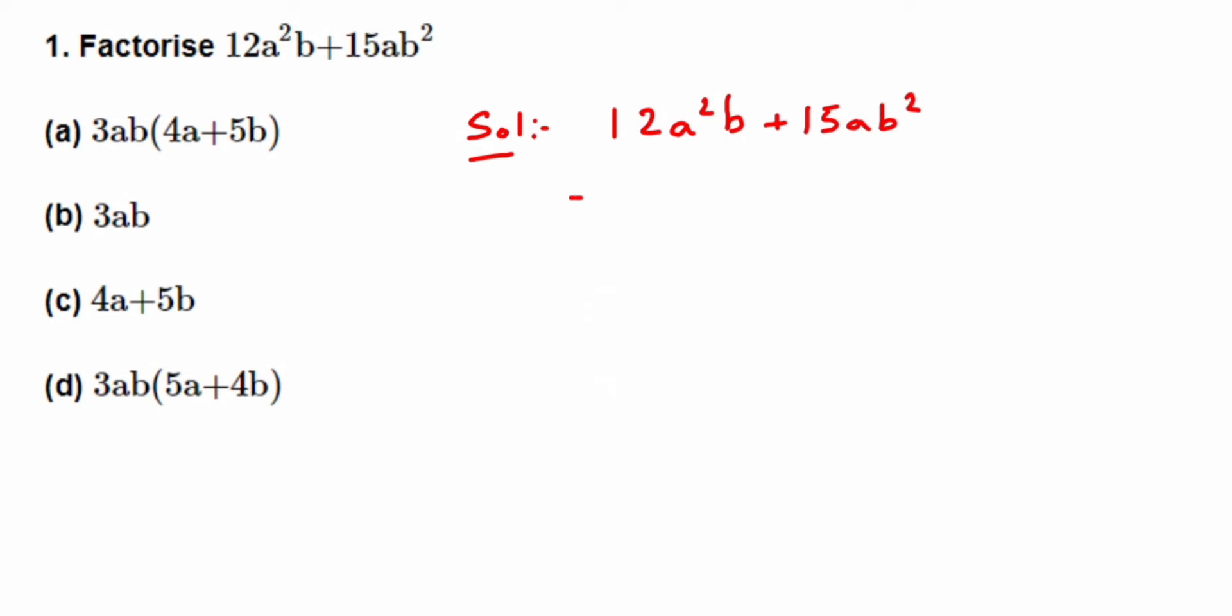So 12 can be written as 2 × 2 × 3. Now we have a² means you are multiplying a here two times. It is a × a × b. Plus again we have 15. 15 can be written as 3 × 5, both are prime numbers.